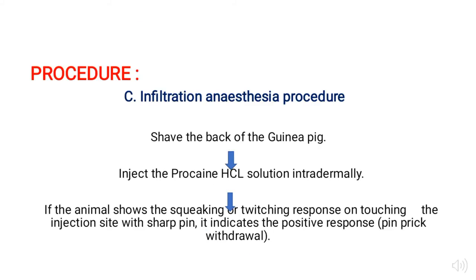Now the procedure for the third method is infiltration anesthesia. The animal used here is a guinea pig. Before infiltration, expose the skin by shaving that particular area on the back of the guinea pig. Shave and inject procaine hydrochloride solution intradermally. If the animal shows squeaking and twitching response on touching the injection site with a sharp pin, it indicates a positive response — that is, pin prick withdrawal.